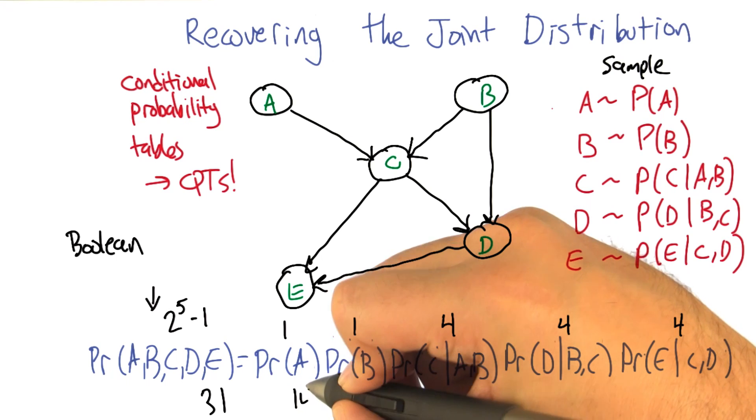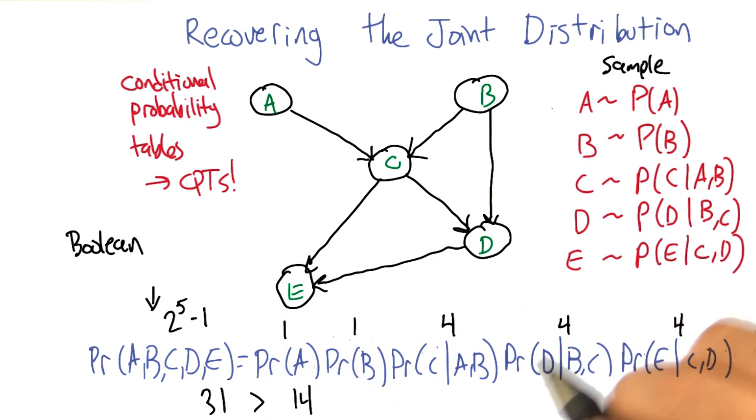So you're right, it is more compact. 31 is bigger. Right, but let's imagine that all of the variables were in fact completely independent of one another. Then you would have five. You'd only need five numbers.